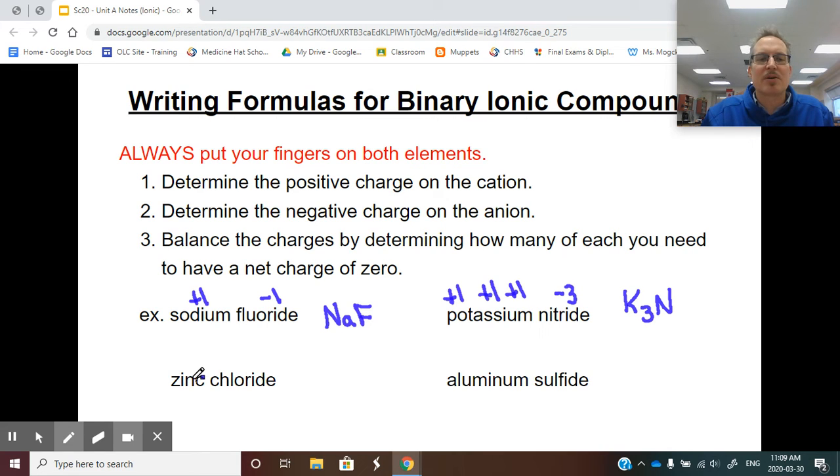Let's do the next example. Zinc chloride. I'm going to put my finger on zinc. Zinc has a two positive charge. Chlorine has a negative one charge. Two to one. This does not balance. I need more chlorine. So I'm going to add another chlorine, which means when I go to write this, I have one zinc, but I have one, two chlorines. So ZnCl2.